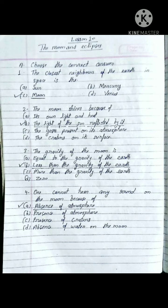Question number four: One cannot hear any sound on the Moon because of — option A: absence of atmosphere, option B: presence of atmosphere, option C: presence of craters, option D: absence of water. Option A is correct — absence of atmosphere. One cannot hear any sound on the Moon because of the absence of atmosphere.